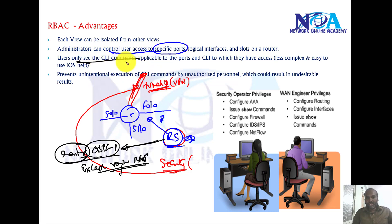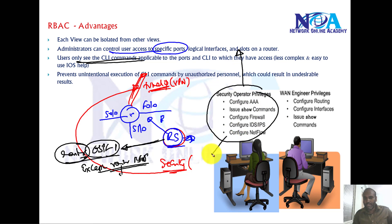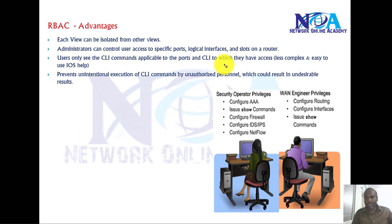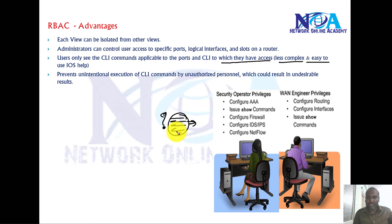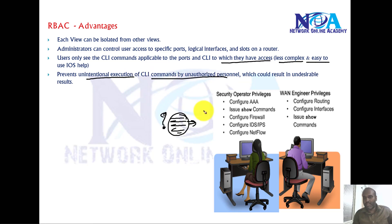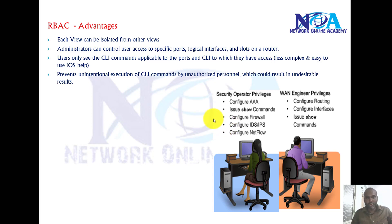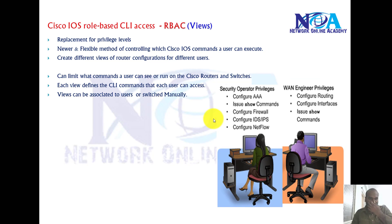Users can only see the CLI commands defined in their view. When using IOS help with '?', only the commands specific to that view are shown — making it easier for engineers to identify what they can execute, and preventing unintentional execution of commands by unauthorized personnel, which could cause undesirable results. Compared to Privilege Levels, Role-Based CLI Access is a better way to assign specific command sets to individual users.